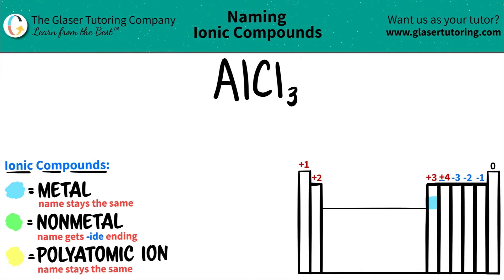And then chlorine is over here on the periodic table. It's in the same period as aluminum, but just moved over. But it's to the right of the staircase, and therefore it's a non-metal. So we have aluminum in blue because it's a metal, and we have chlorine in green because it's a non-metal.